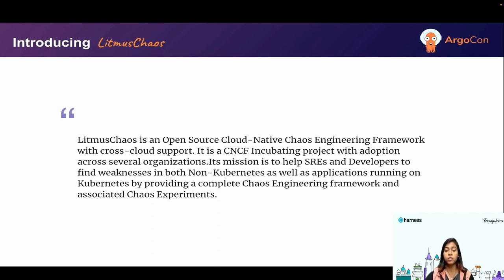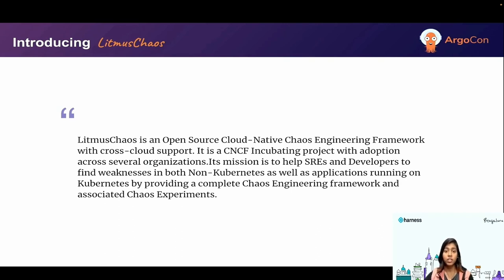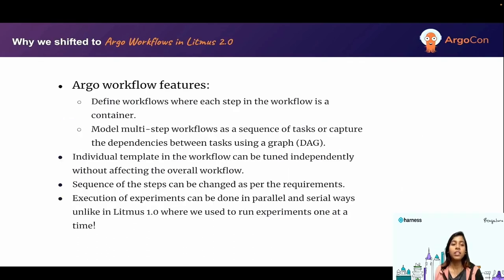With that, we can introduce Litmus Chaos, which is an open source cloud-native chaos engineering framework. It also has cross-cloud support and is now a CNCF incubating project with adoption across several organizations. Its main mission is to help SREs and developers find weaknesses in both Kubernetes and non-Kubernetes applications.